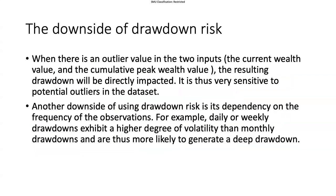Let's look at the downside of drawdown risk. It's actually very simple because it relies on two inputs: the current wealth value at the current time point and the cumulative peak wealth value. Historically, what is my peak?